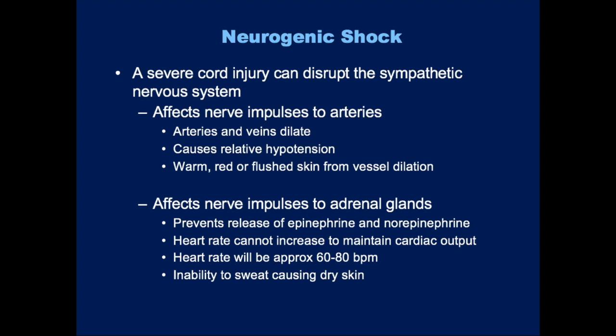The other problem with neurogenic shock is that you can't send impulses to your adrenal gland, which releases epinephrine and norepinephrine. In any other shock state with low blood pressure, your body would stimulate the release of these hormones to help compensate — but you can't do that. Norepinephrine is released when your body wants to constrict blood vessels to raise blood pressure, and you can't. Epinephrine normally increases heart rate to compensate for low blood pressure, but again, you can't. You also won't be able to sweat because you can't release these hormones.